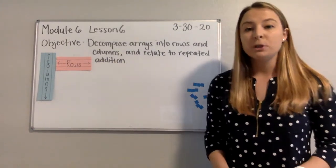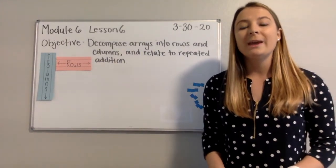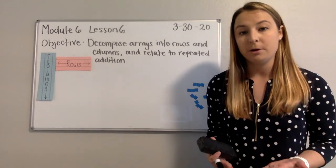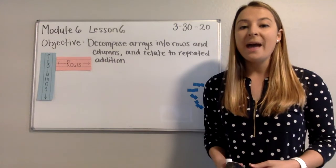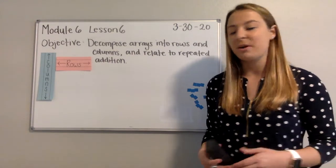For example number two, we are going to be looking at the columns when we talk about our groups. We are going to create three columns of five. Go ahead and make your counters as I work on mine.